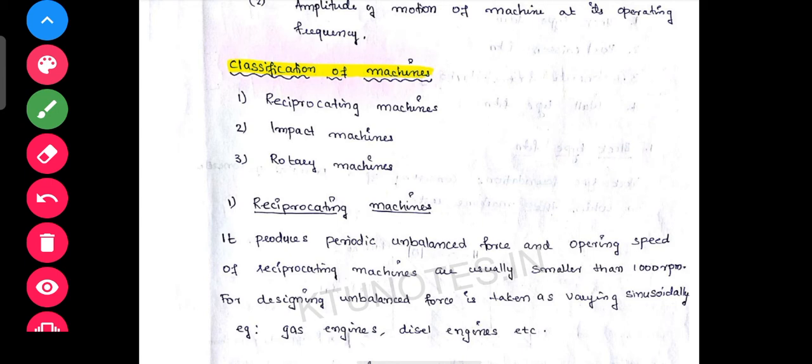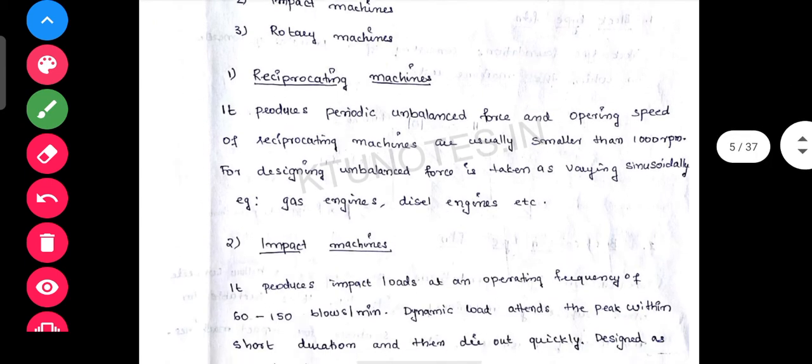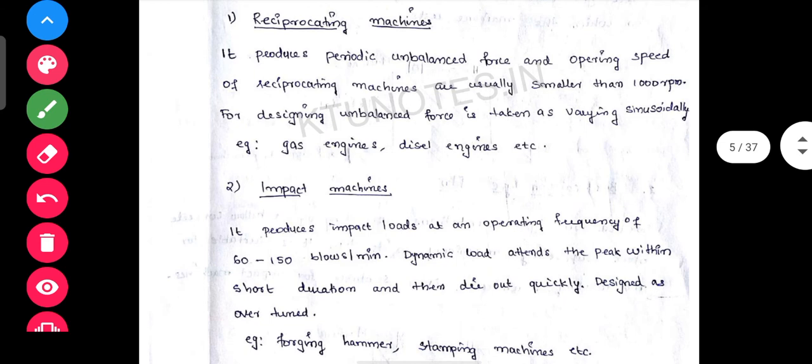Classification of machines. Reciprocating machines: the movement is a to-and-fro movement. Impact machines: impact machines are also referred to in testing machines — aggregates are affected. In this example, the reciprocating machine is like a Charpy impact testing machine, which is on a swing in the lab.